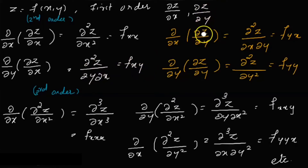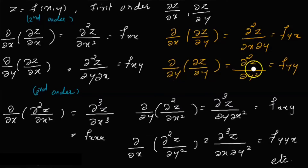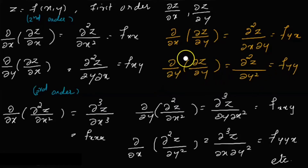If you differentiate dou z by dou y again with respect to x, you get dou square z by dou x dou y. In the notation, we denote it as fyx — first with respect to y, then with respect to x. If you differentiate dou z by dou y with respect to y, you get dou square z by dou y square, denoted fyy. These four are the second-order partial derivatives, and the two mixed derivatives are always equal.